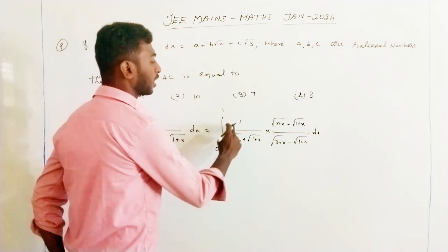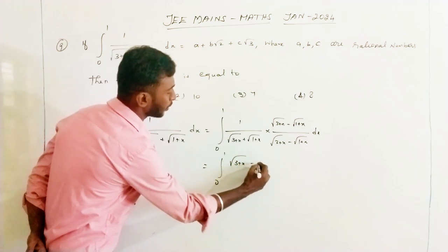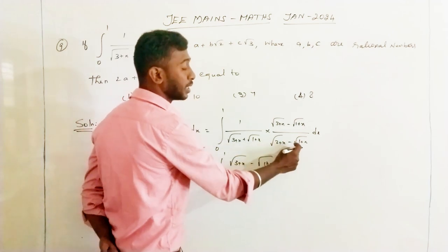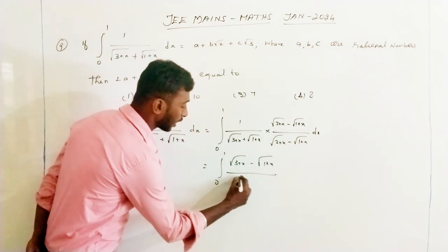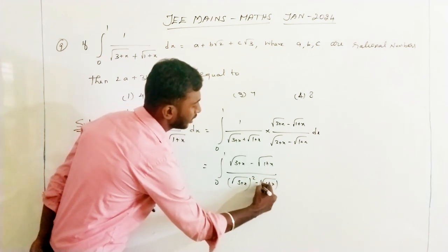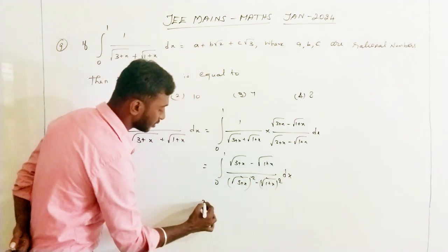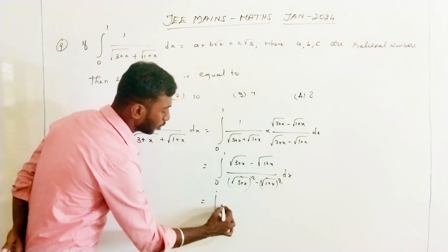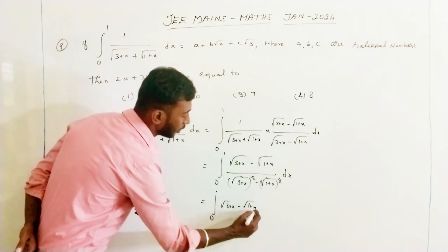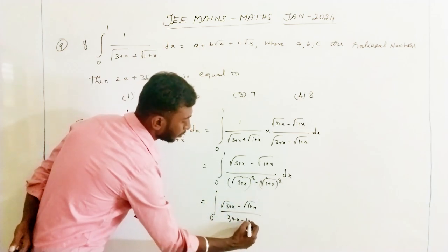Rationalizing, the numerator becomes 1 into that expression, so we get the integral over 0 to 1 of root of (3+x) minus root of (1+x) divided by (a+b)(a-b) equals a squared minus b squared. So the denominator becomes (3+x) minus (1+x).